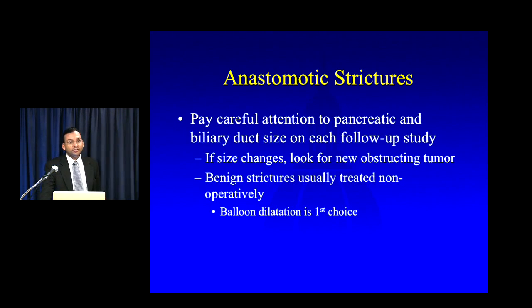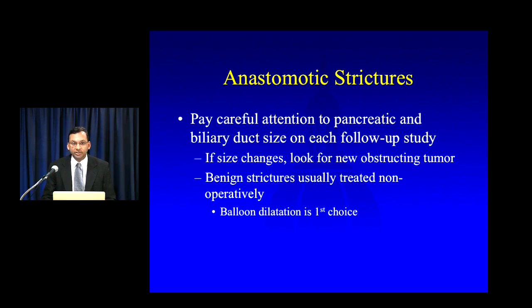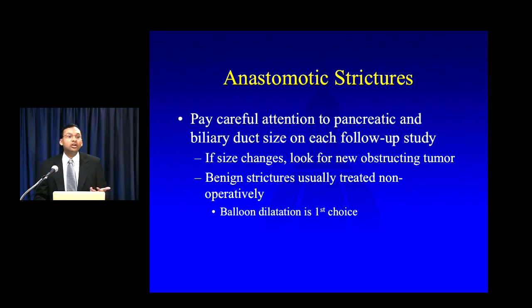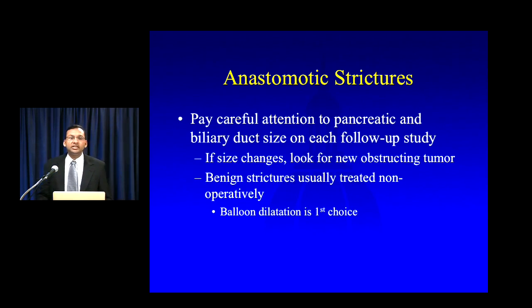The key when looking for anastomotic strictures is to pay careful attention to the size of the pancreatic duct and bile ducts in every study — this goes into my dictation in the body of every report. I note whether the pancreatic duct is stable in size, whether it's large and whether it's changed, and similarly whether there's new or increasing biliary ductal dilatation. If I see a change in size of either the biliary tree or the pancreatic duct, the first thing I look for is a new occult obstructing tumor — you don't want to miss recurrent tumor involving the anastomosis. If you don't see tumor, then most likely you're dealing with a benign stricture, which in most instances can be treated non-operatively with balloon dilatation.